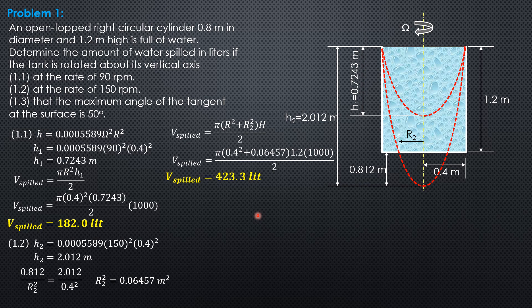Then finally, for the third, the maximum angle of the tangent at the surface is 50 degrees. So the slope, the maximum slope is given by tangent of theta max equals omega square R over G. Then from there, we can solve for omega in radians per second. So tangent of 50 degrees equals omega square times 0.4 over 9.81. So omega is 5.406 radians per second.